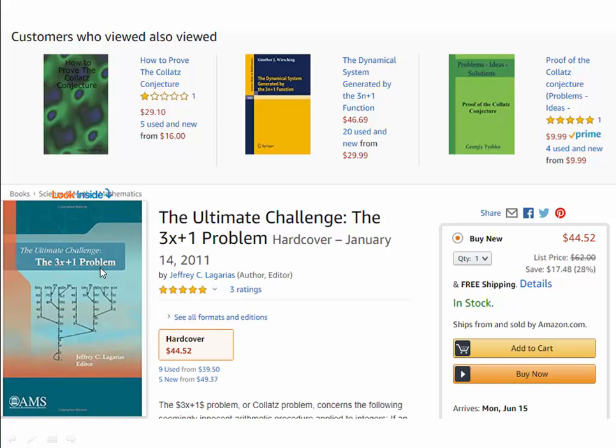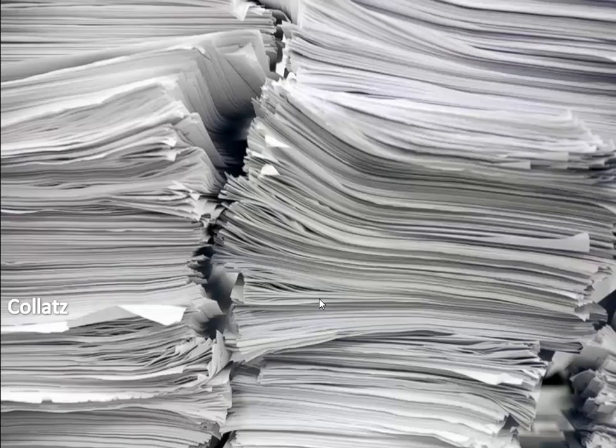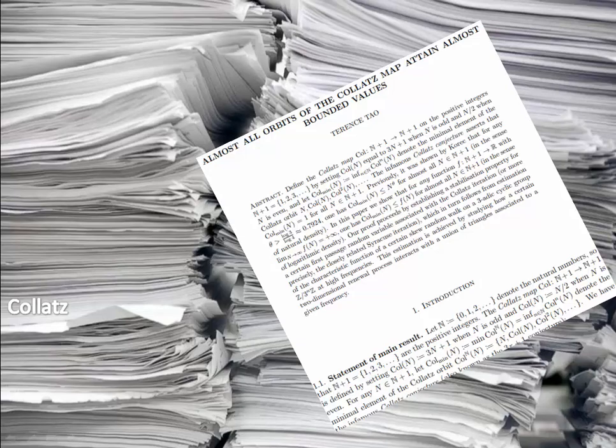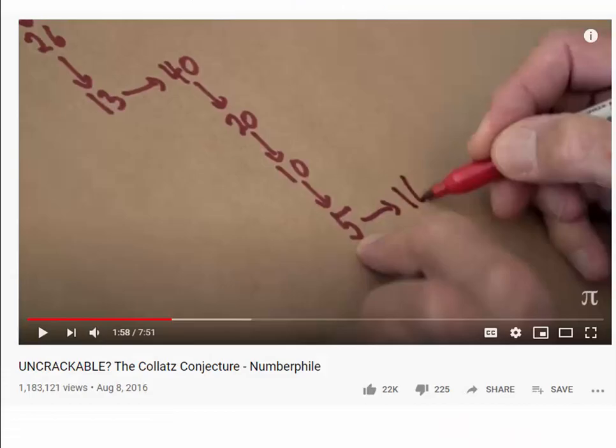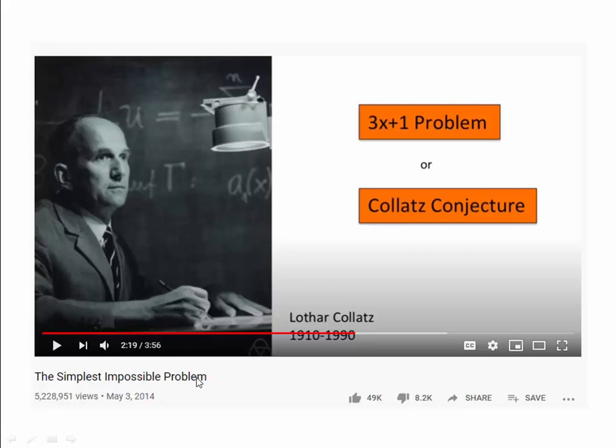There have been books written about this problem. You can see some of the titles: How to Prove the Collatz Conjecture, and The Ultimate Challenge, the 3x plus 1 problem. There have been hundreds of papers written on this problem. In fact, there are YouTube videos with millions of views talking about this problem. Look at the heading: Uncrackable, the Collatz conjecture. Another one, the simplest impossible problem, 5 million views.